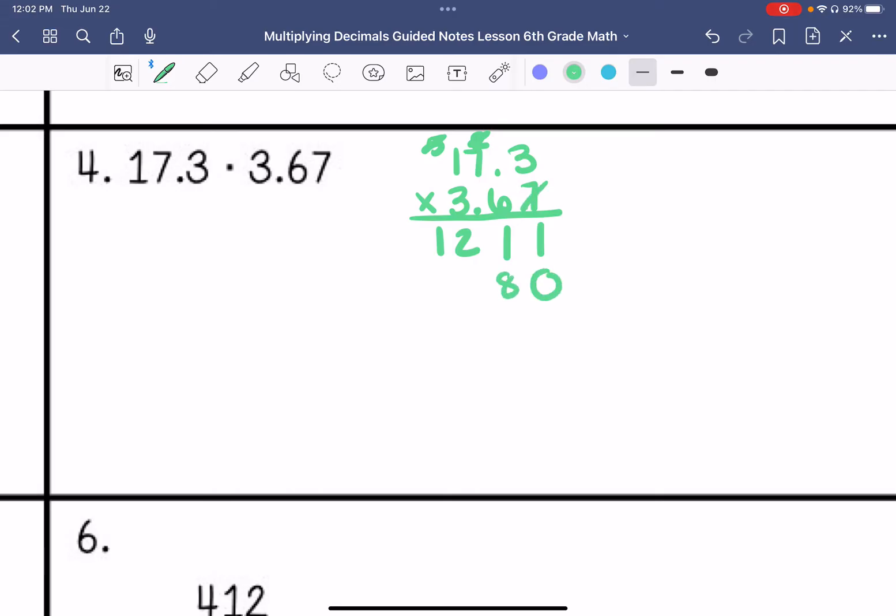6 times 3 is 18. 6 times 7 is 42. 42 plus that 1 is 43. And that's 10. 2 placeholders. 3 times 3 is 9. 3 times 7 is 21. 3 times 1 is 3. Plus that 2 is 5. So then we are going to add all of these. And then we have 1, 2, 3. So my answer is 63.491. That one was a little bit tougher.